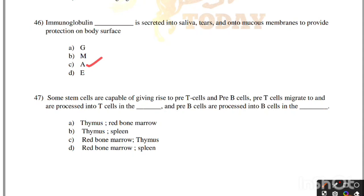Some stem cells give rise to pre-T cells and pre-B cells. Pre-T cells migrate to and are processed into T cells in the thymus, whereas pre-B cells are processed into B cells in the red bone marrow. Correct answer: thymus for T cells and red bone marrow for B cells.